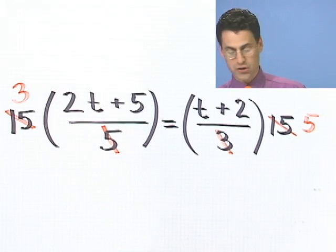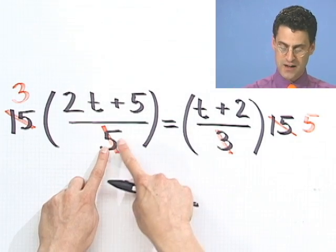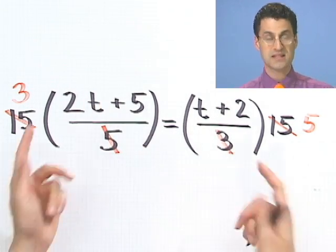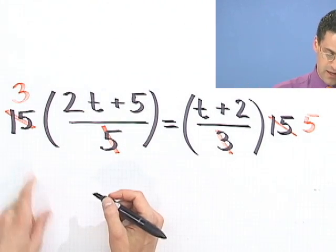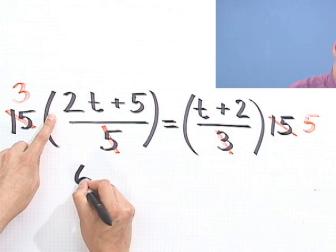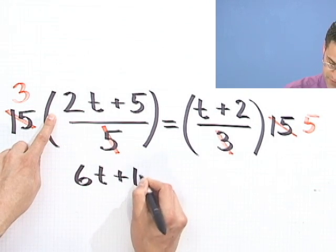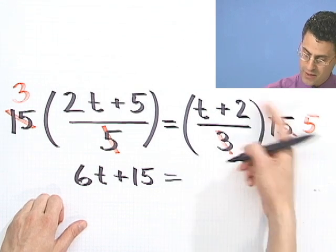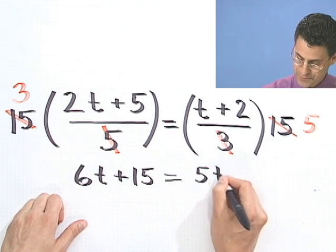Some people, by the way, think of this as cross-multiplying. You might think of 5 times this times 3 times this. And it's the exact same thing if you think about it. Anyway, now I've got to distribute, though. Don't forget to distribute that all the way through. So that's going to be a 6t plus 15. See, the 15 is because I have to distribute. And now I'm going to distribute the other way and see 5t plus 10.